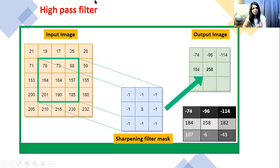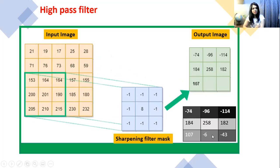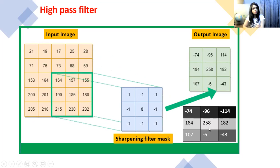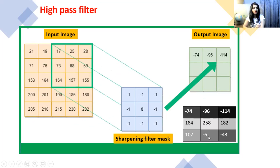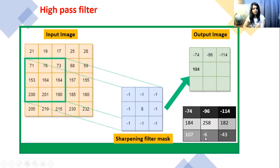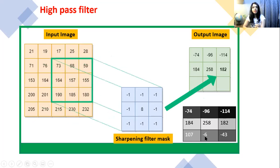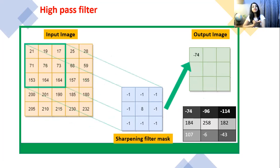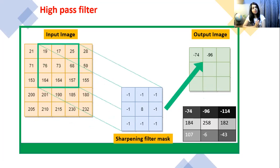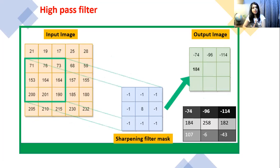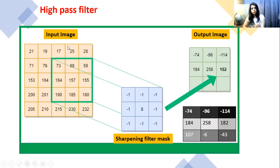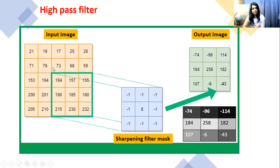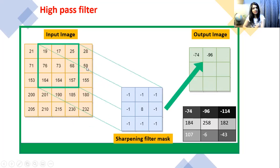After high pass filtering you will get these values. If you plot it, the output image will show values like minus one or one — meaning darker regions — and values like 258 meaning almost white, and so on. High pass filter extracts and sharpens the image and extracts the edges.